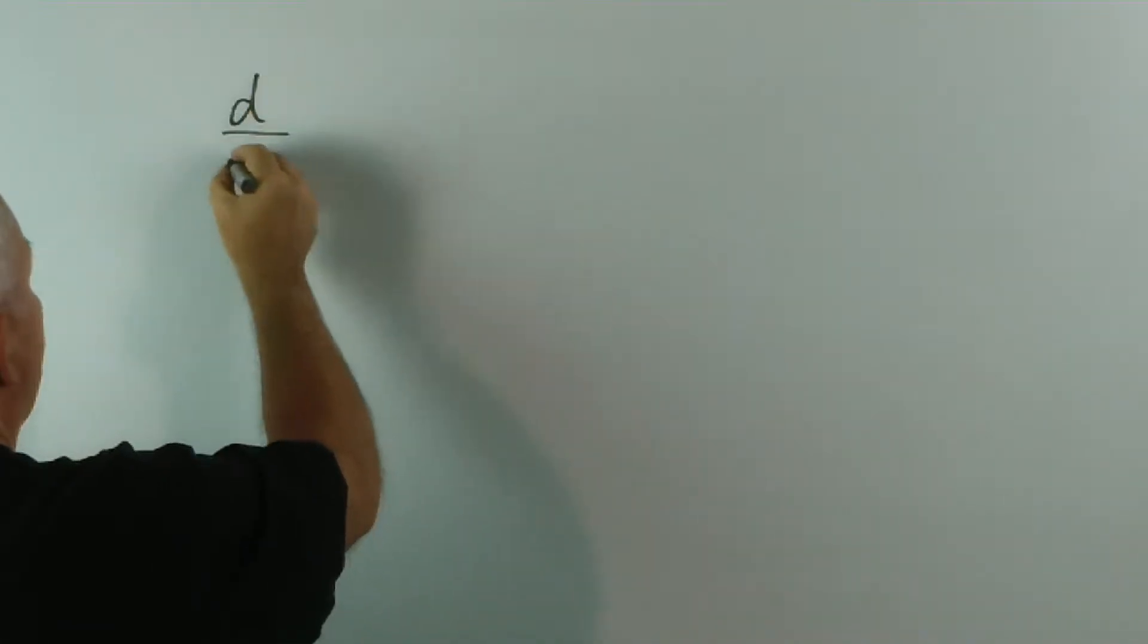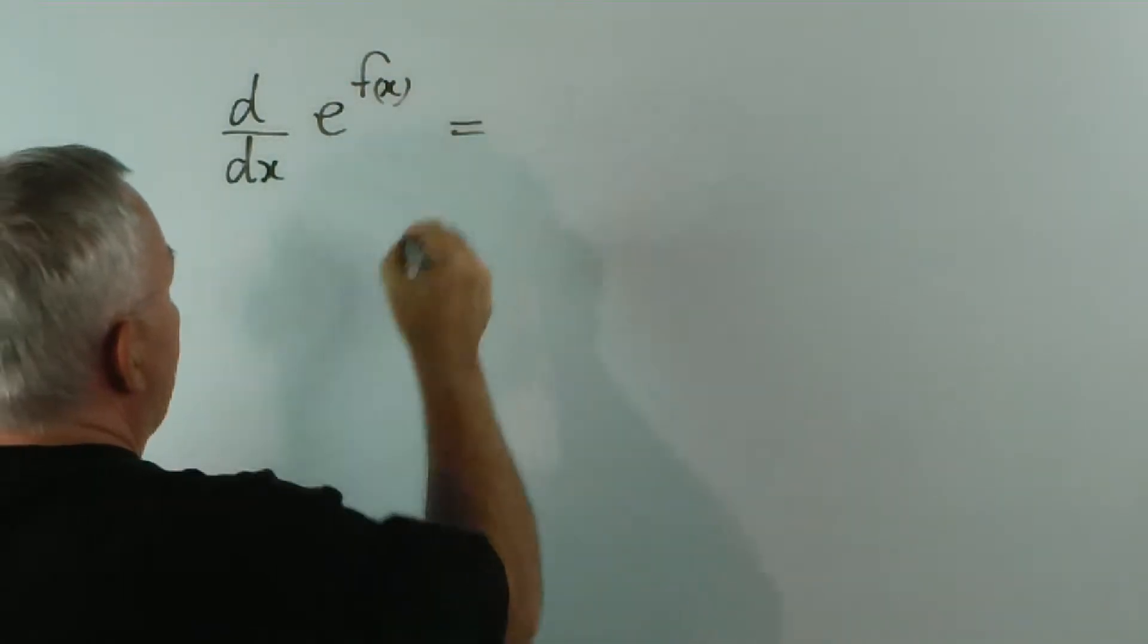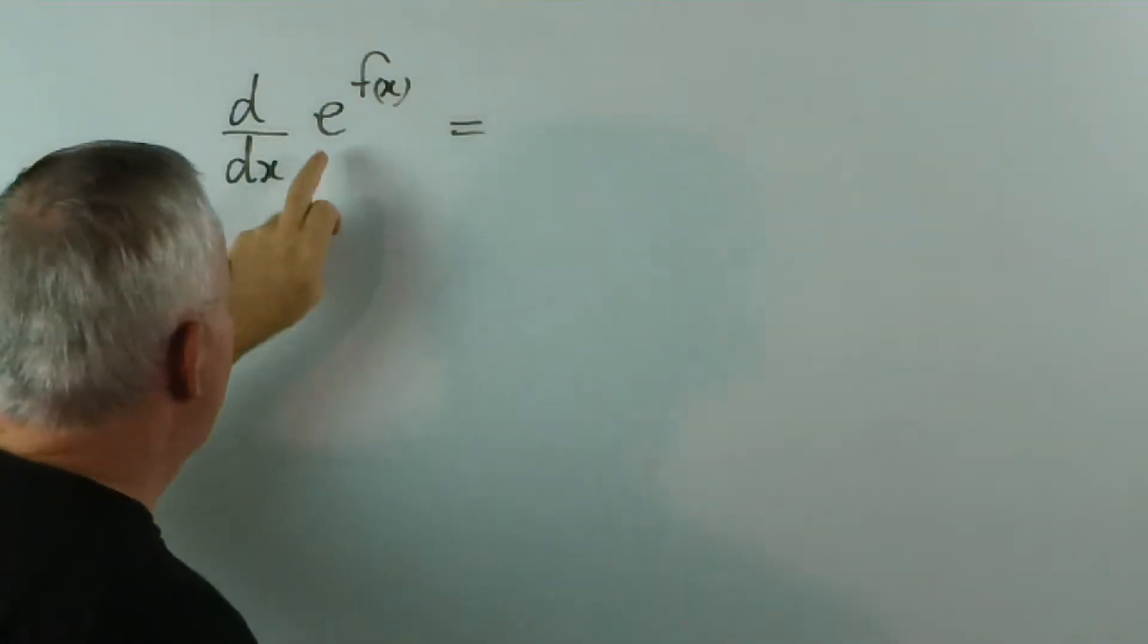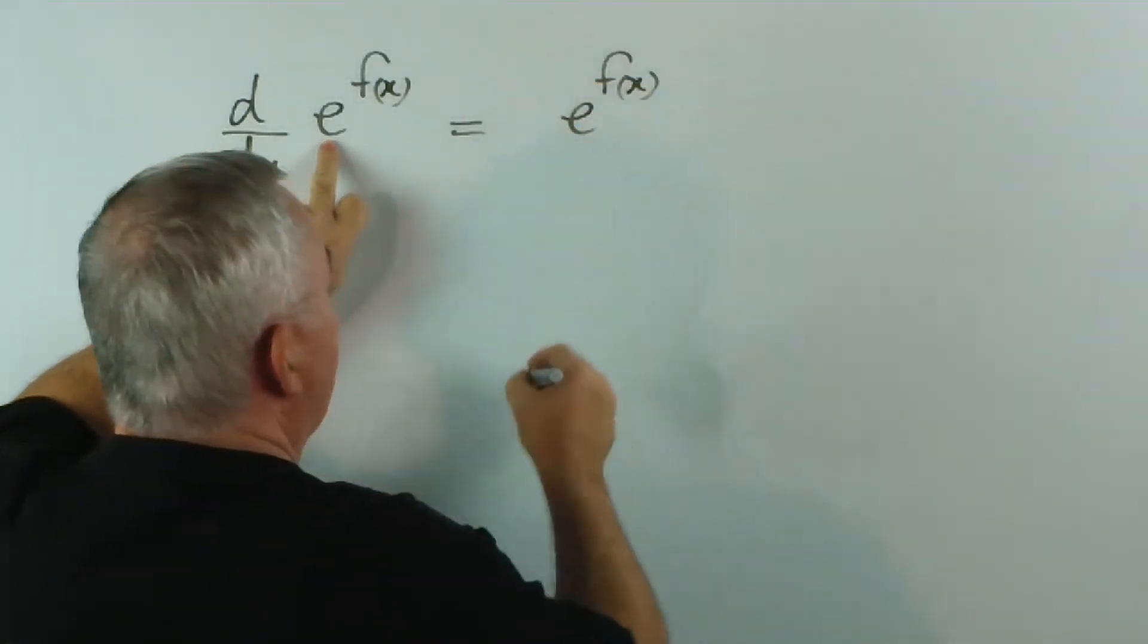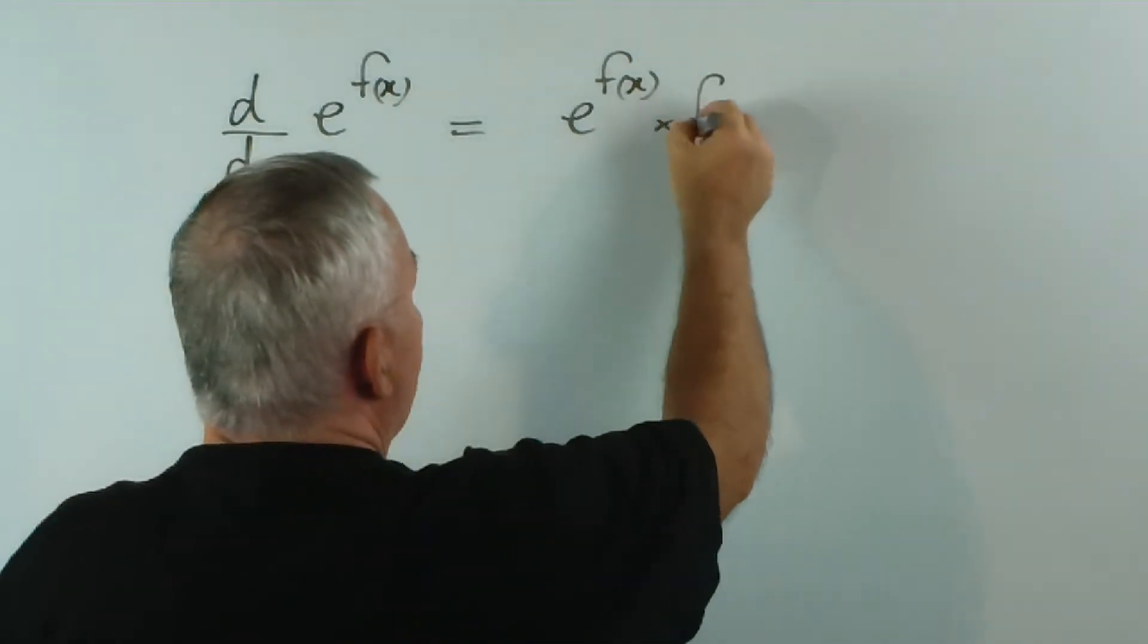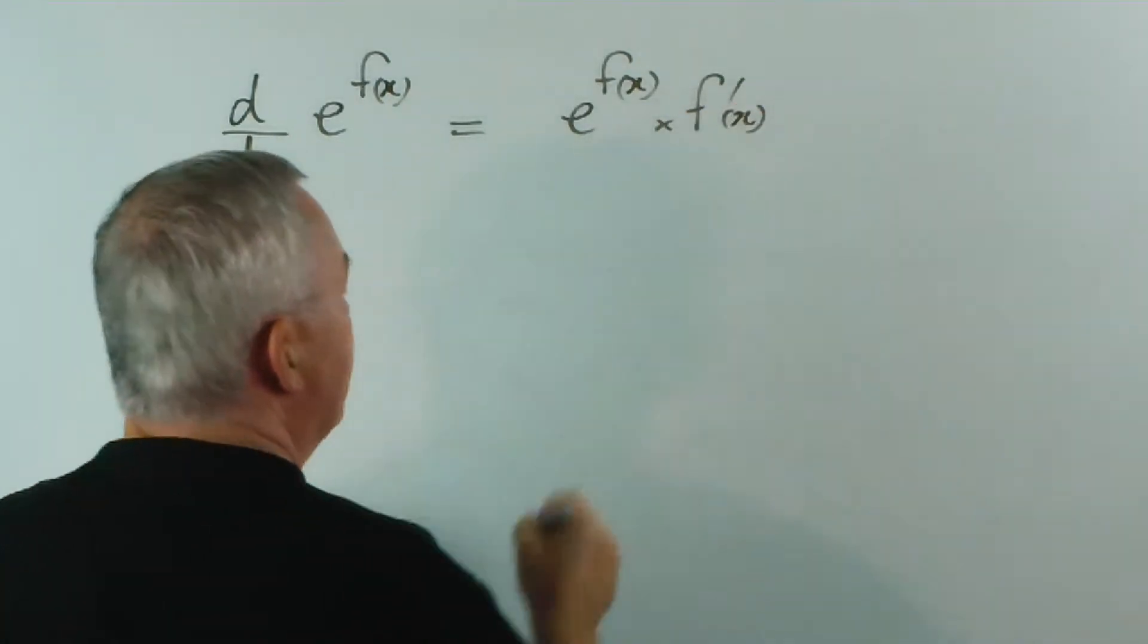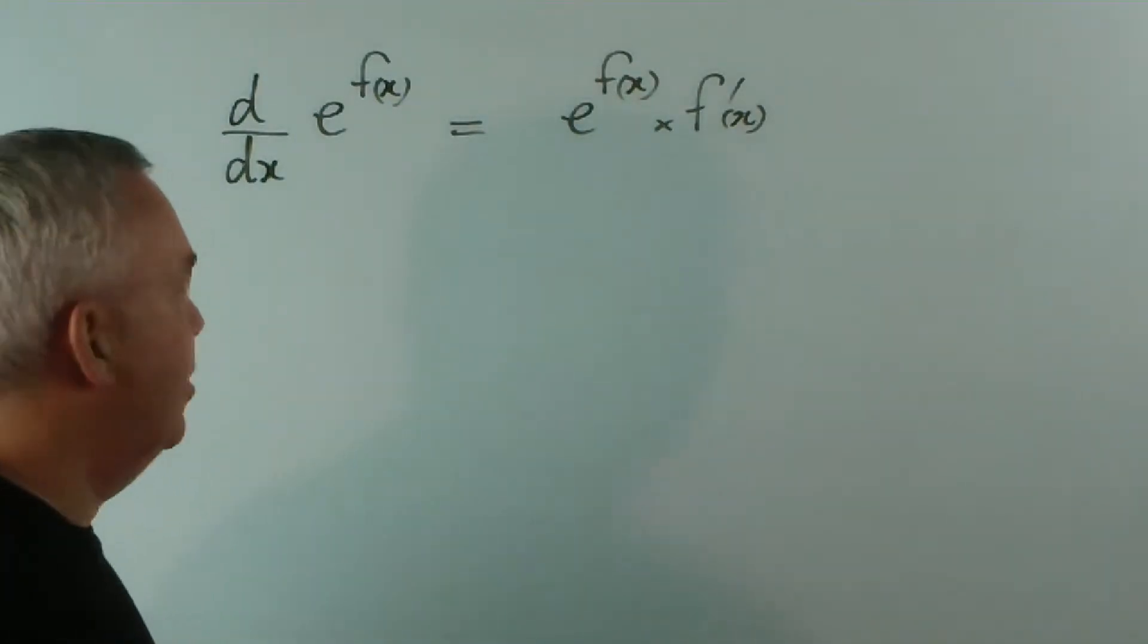If I find the derivative of e to some function of x, we know that taking the derivative of an exponential function leaves it untouched. And then, using the chain rule, we multiply by the derivative of the function inside. So that's our basic pattern for differentiating exponentials.